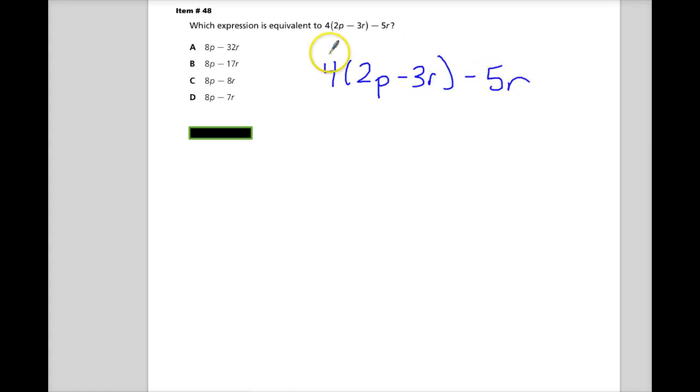I'll use the distributive property first. 4 times 2p is 8p, and 4 times negative 3r is negative 12r, so that's 8p minus 12r. Then minus 5r gives you 8p minus 17r, and that's it. It's not really that difficult.